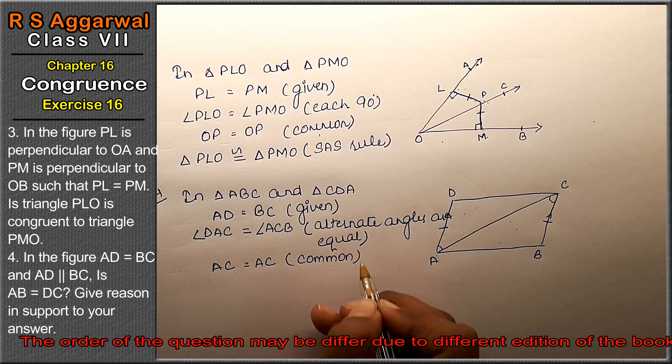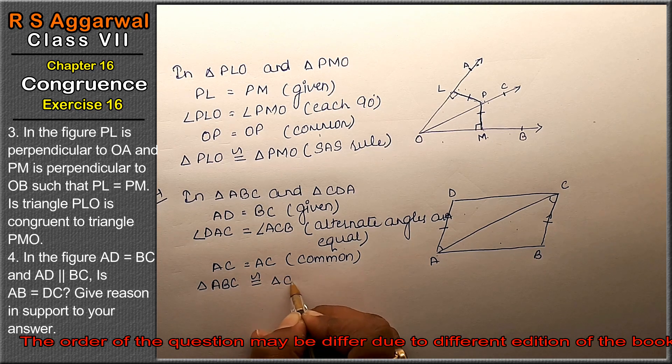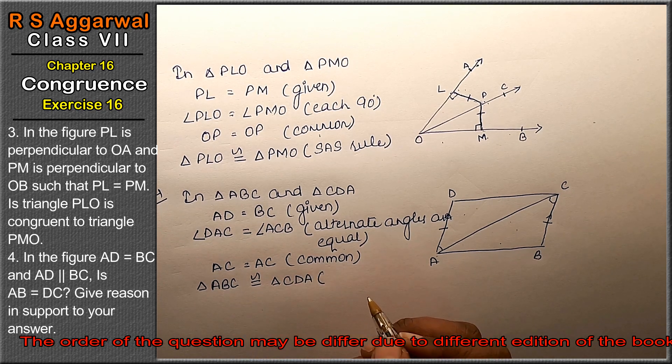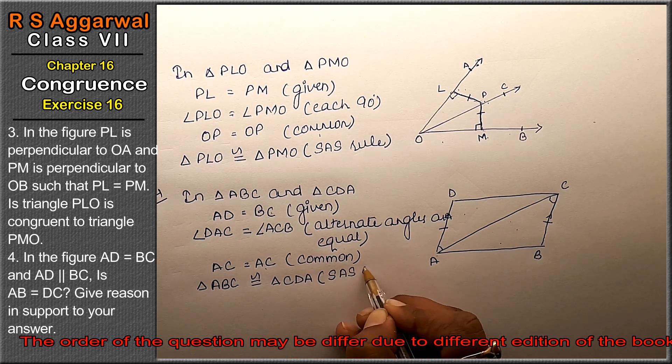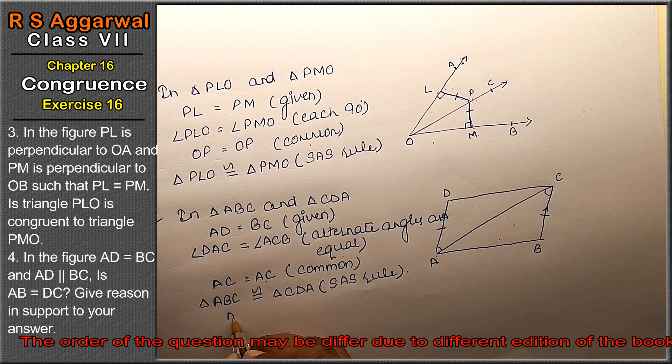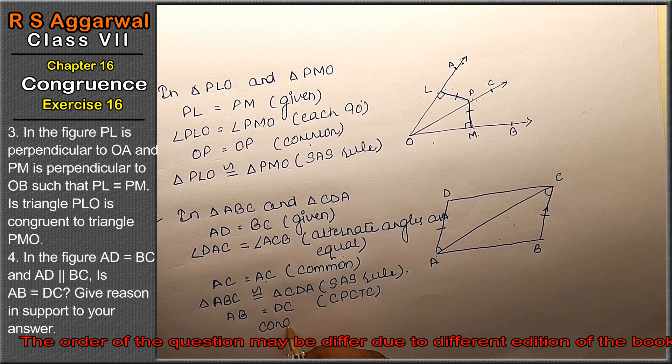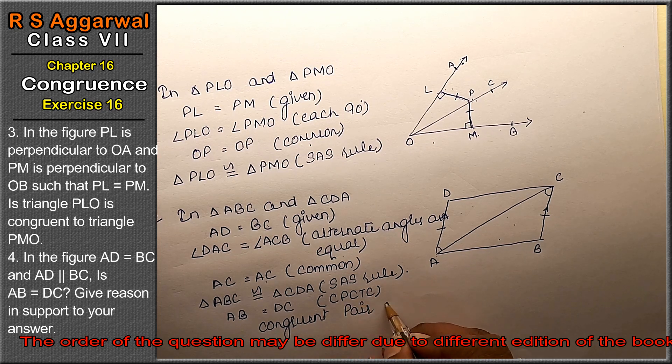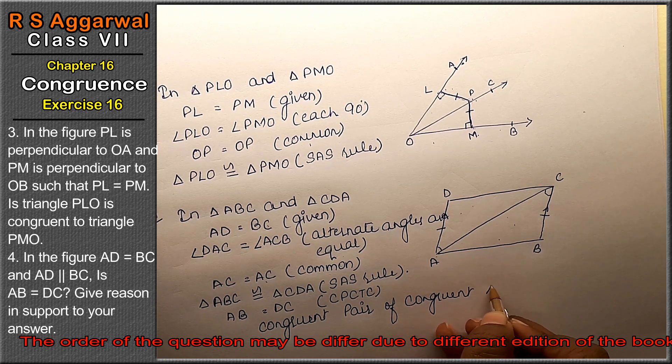So triangle ABC is congruent to triangle CDA. Why? Because two sides are equal and one angle is equal, so SAS rule is applicable. When we prove congruency, we can directly write that AB equals DC by CPCTC, which means corresponding parts of congruent triangles are equal.